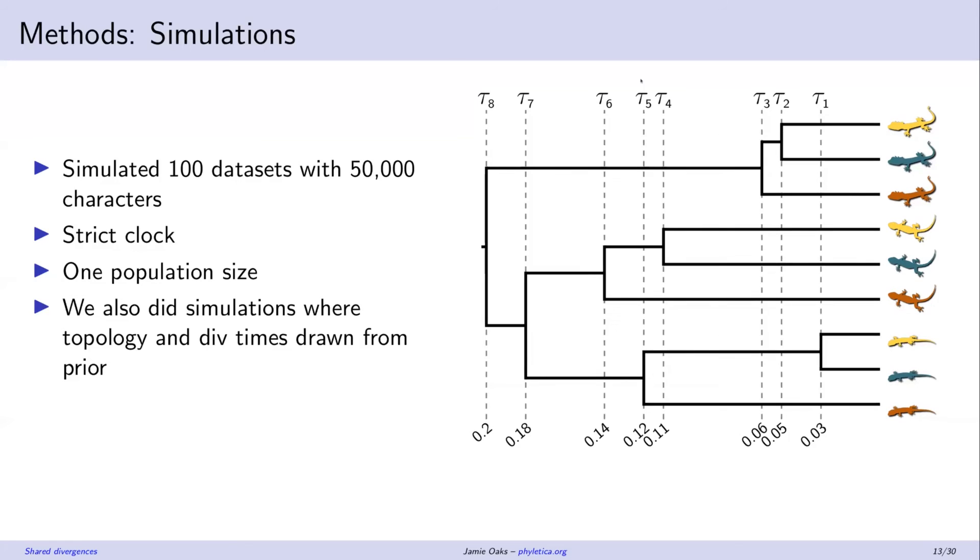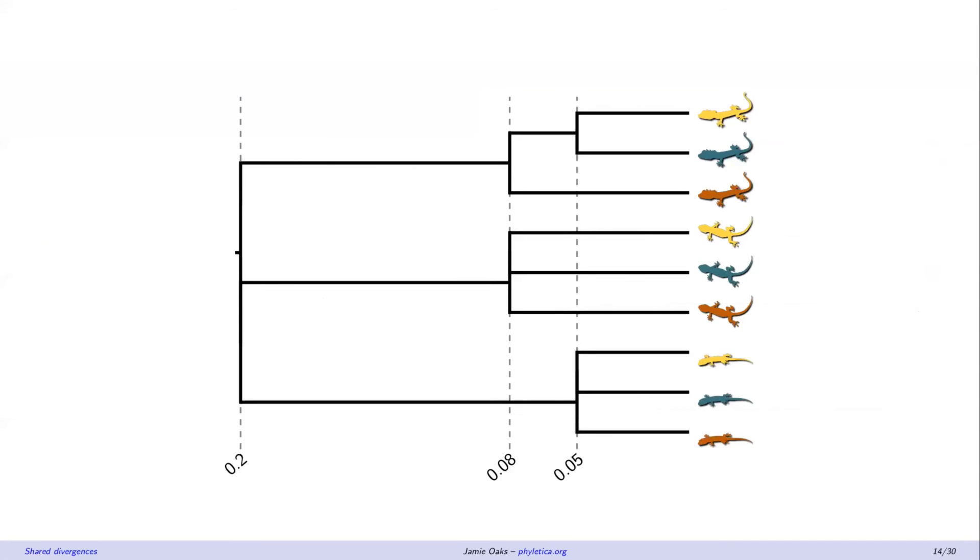And then also on this independent strictly bifurcating tree here with some pretty close divergence times, seeing if we can trick the new method into lumping divergences together. And then also we did 200 additional simulations where we are allowing the tree to vary and be sampled from the prior distribution, both a strictly bifurcating prior distribution and the generalized distribution.